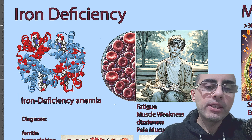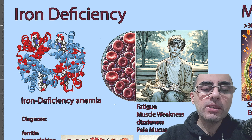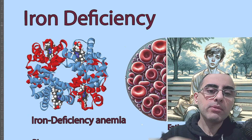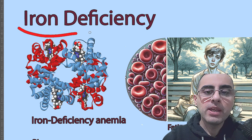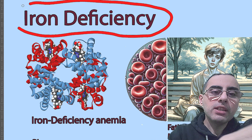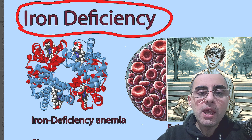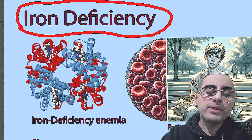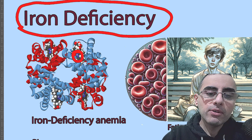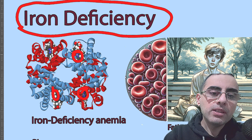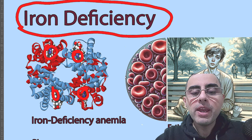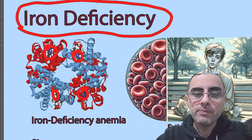We will talk about the most deficient minerals. The first and most common is iron. Iron deficiency is very prevalent. Iron is required for synthesizing hemoglobin, which is required to carry oxygen throughout the body.